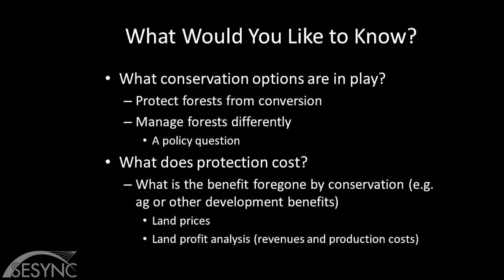So what would we like to know? How to weight those three objectives, and what the universe of possible options is. We can protect forests from conversion to other land uses—that's what's really in play in this example. In other contexts we could think about managing forests differently or reclaiming agricultural land and reforesting. Step one is figuring out the cost of doing this protection. As discussed yesterday, opportunity costs mean: if you keep the land in forests, what benefits are you foregoing? You could convert it to agricultural or urban land, and that's the opportunity cost you factor in.